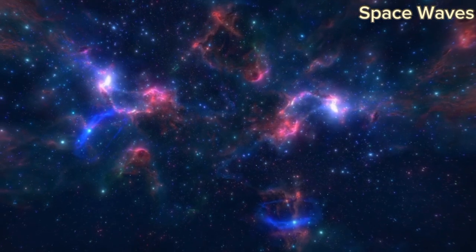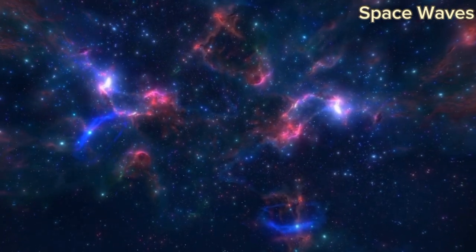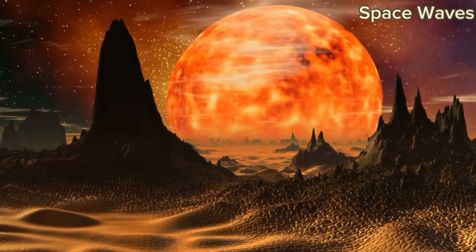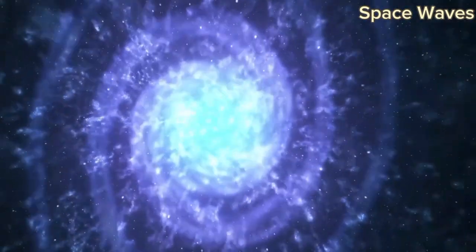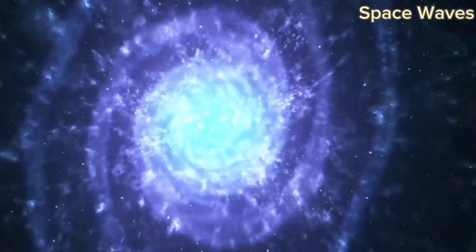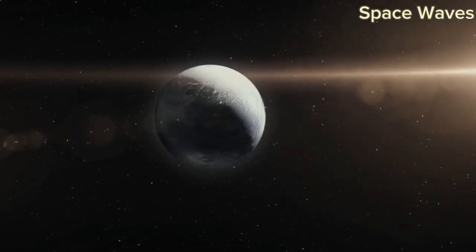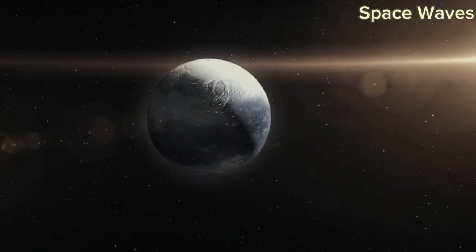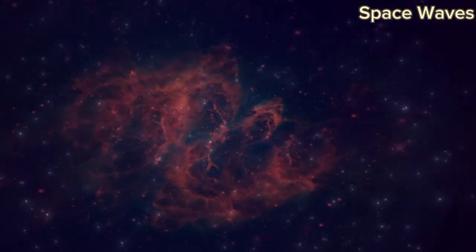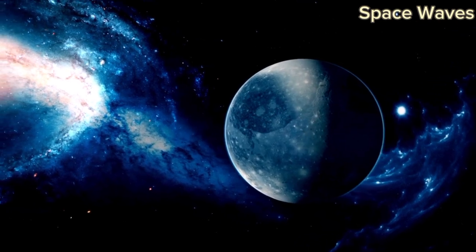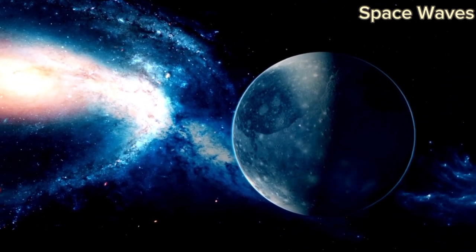Pluto's journey around the Sun is unlike that of any other planet in our solar system. It takes a staggering 248 years to complete a single orbit. Pluto's orbit is marked by its extremely elliptical shape and an inclination of 17 degrees to the ecliptic plane.